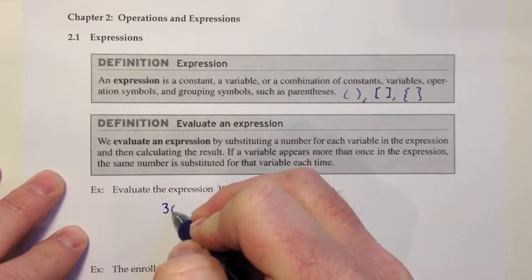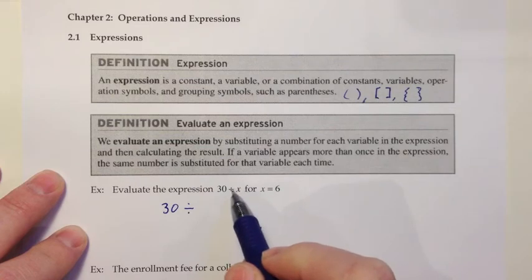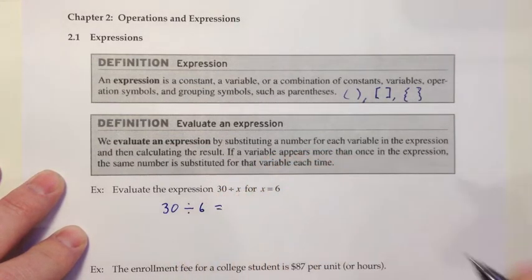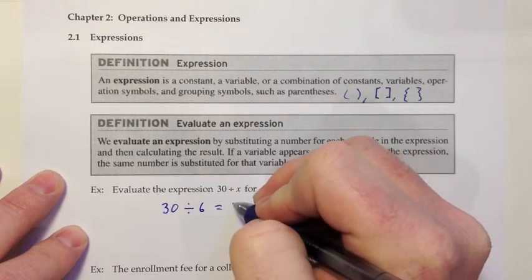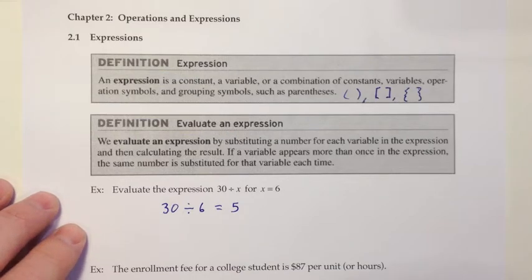I'm going to put 30 divided by, and now I get to the spot where x would have been in the expression, so now I'm going to put the 6 in there. And so 30 divided by 6 is 5. That's it. When you're asked to evaluate an expression, you're just going to substitute or plug in that value for the variable.